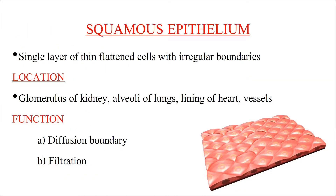Squamous epithelium consists of a single layer of thin, flattened cells with irregular boundaries. They are located in the kidneys, alveoli of the lungs, and lining of the heart and blood vessels. Their function is to act as a diffusion boundary and to filter substances.